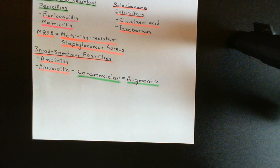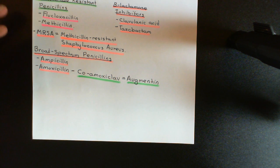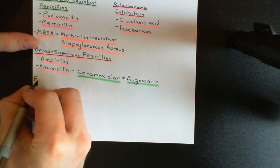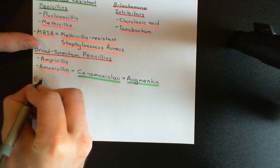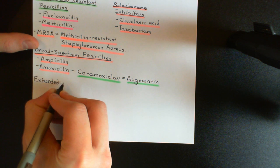Amoxicillin is there to do the actual killing of the bacterial cell; clavulanic acid is there to inhibit any beta-lactamase enzymes that would break down the amoxicillin. So that's the third class of penicillin antibiotics. Now onto the final class — the extended spectrum penicillins. These are even broader spectrum, able to kill an even larger spectrum of bacterial species.